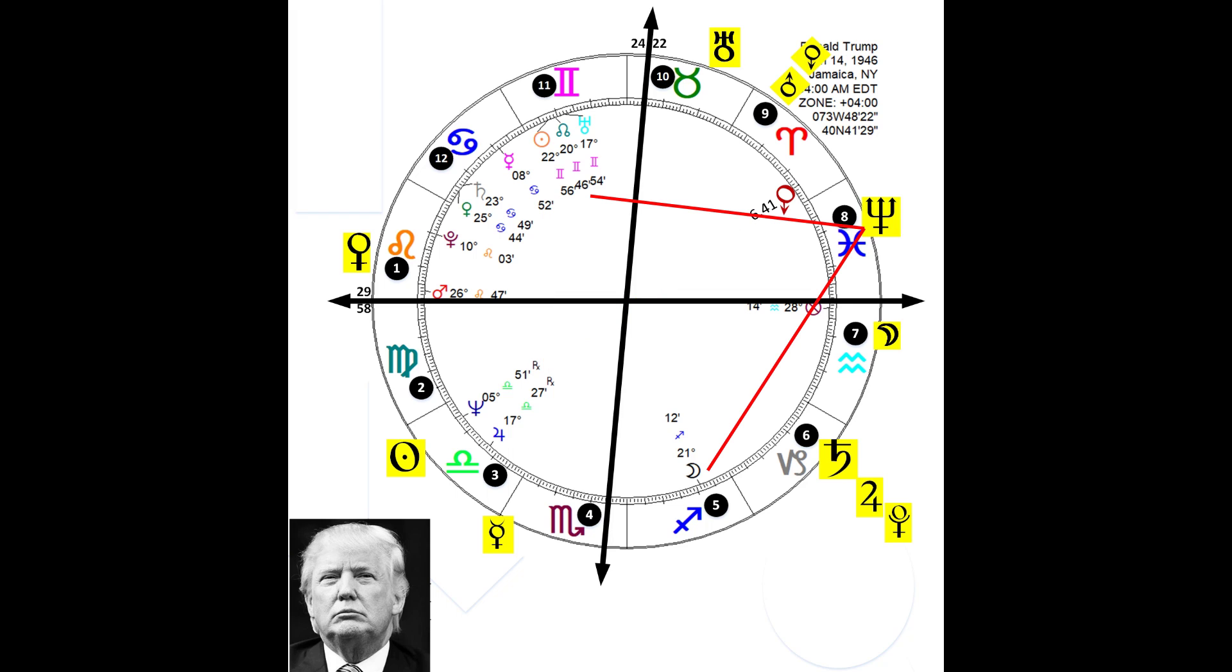From the summer of 2019 until at least the end of 2023, Neptune will be locked into squares to his Sun, Moon, Uranus, and Lunar nodes.